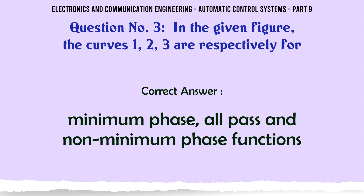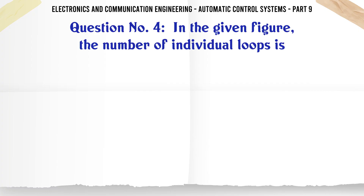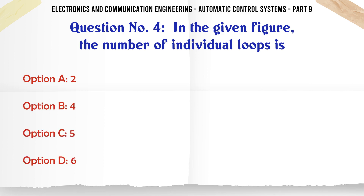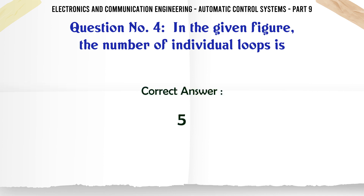In the given figure, the number of individual loops is: A. 2, B. 4, C. 5, D. 6. The correct answer is: 5.